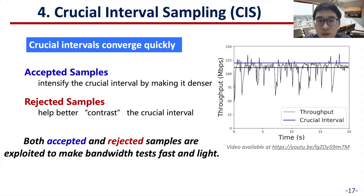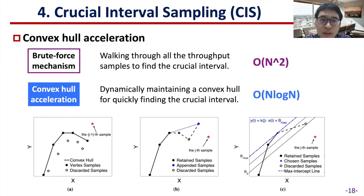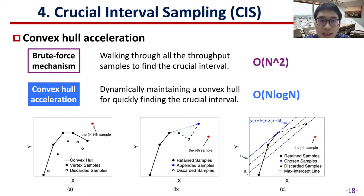In practice, we need fast calculation of the real-time crucial interval. Therefore, we propose convex hull acceleration that reduces the complexity from O(n²) to O(n log n).